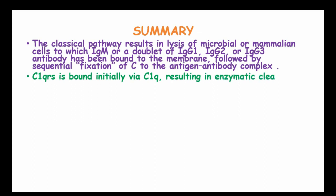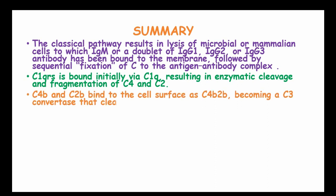C1Q array is bound initially via C1Q, resulting in enzymatic cleavage and fragmentation of C4 and C2. C4B and C2B bind to the cell surface as C4B2B, becoming the C3 convertase which cleaves C3 into fragments C3A and C3B.